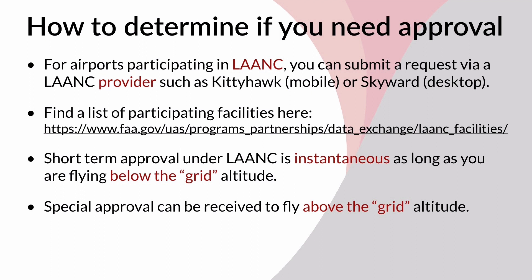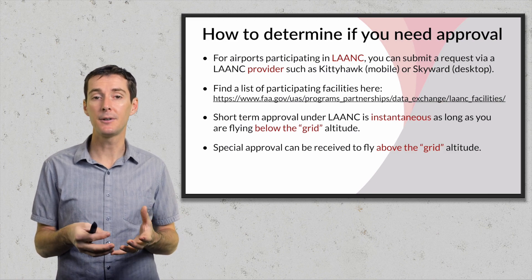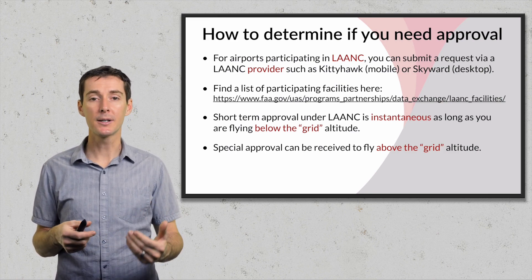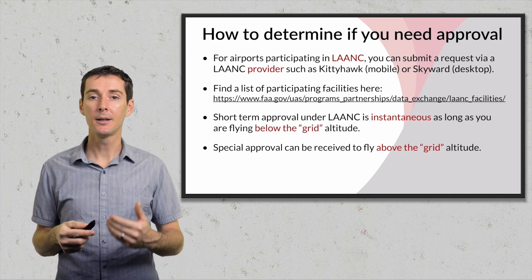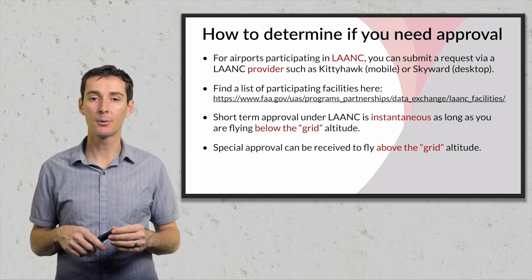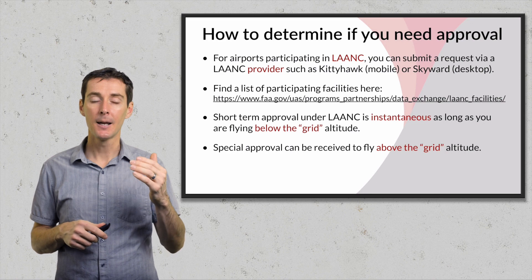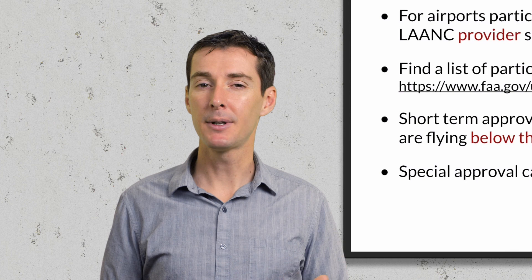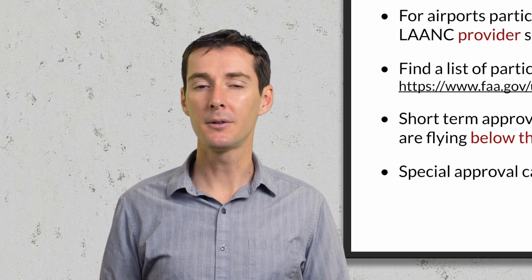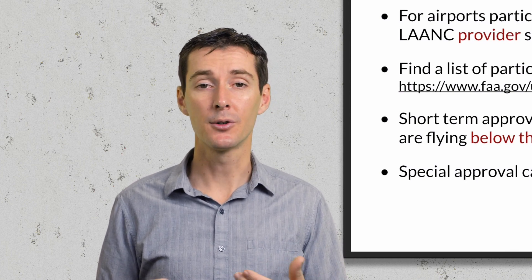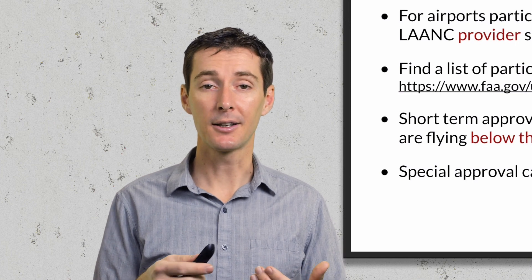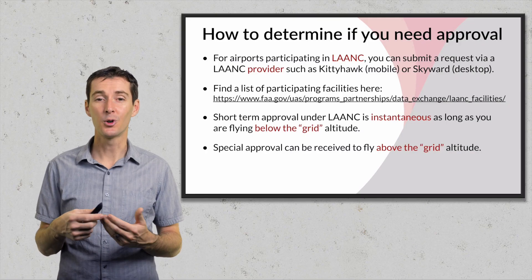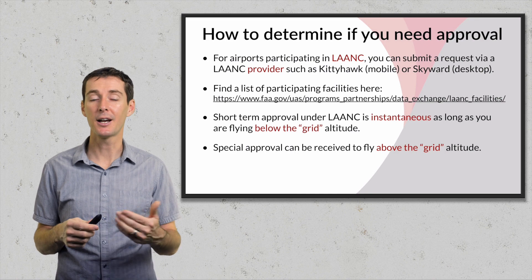If you want to fly higher than the grid — say you have a job where you need to fly at 400 feet but the grid only says 250 feet — you can actually request to fly above the grid through one of the providers like Kitty Hawk or Skyward. That request will have to go to the FAA for approval, which takes about two or three days. Make sure you plan ahead of time. Don't do it 10 minutes before your flight, or even the day before — you have to plan in advance.